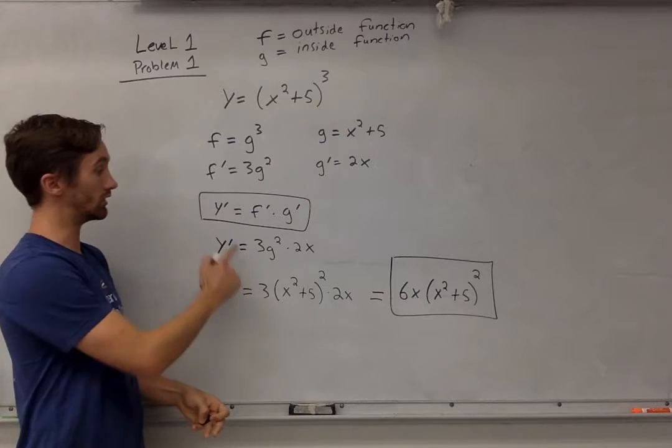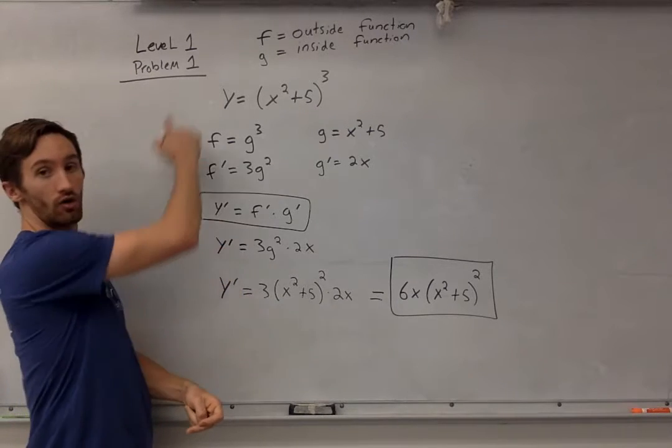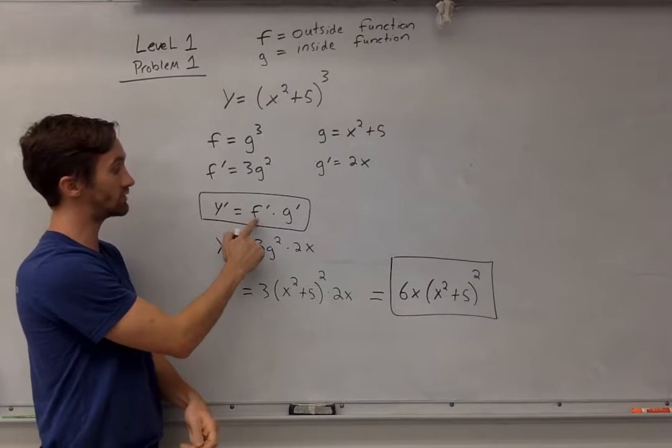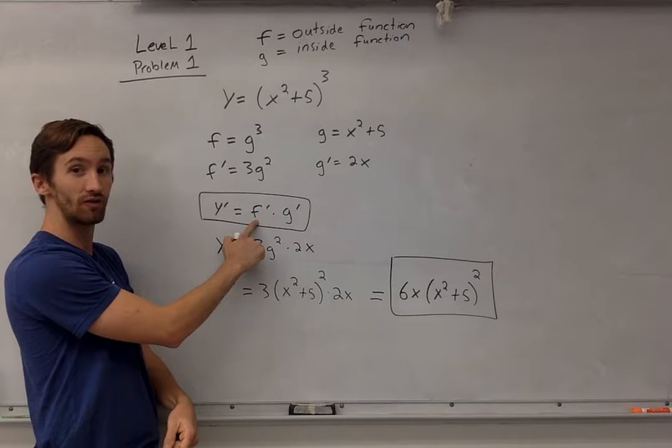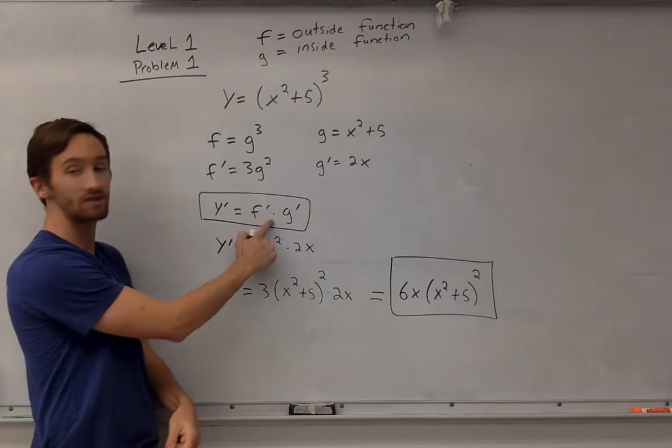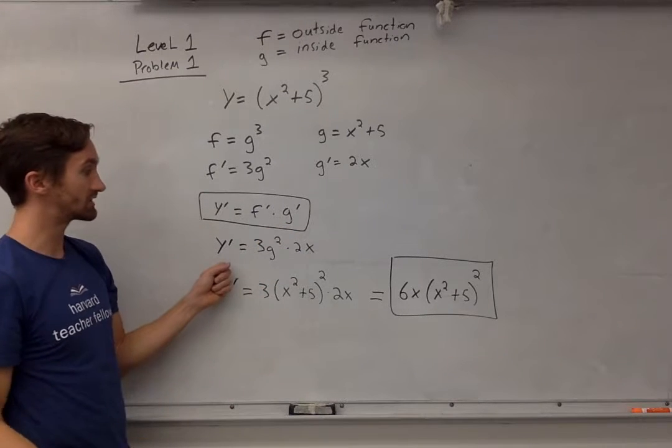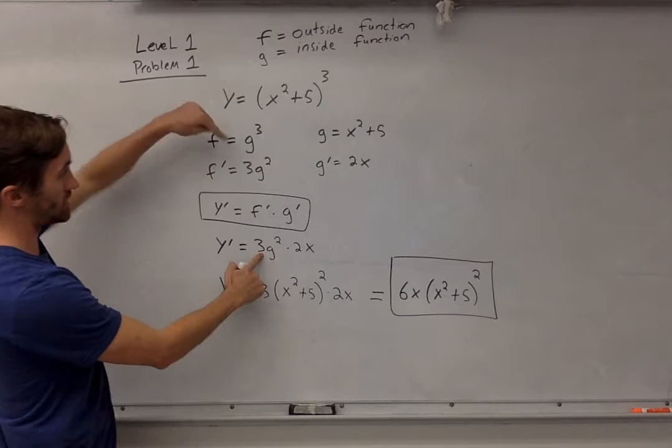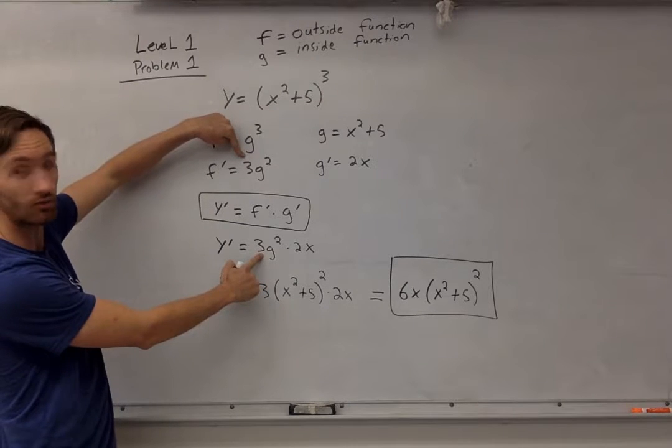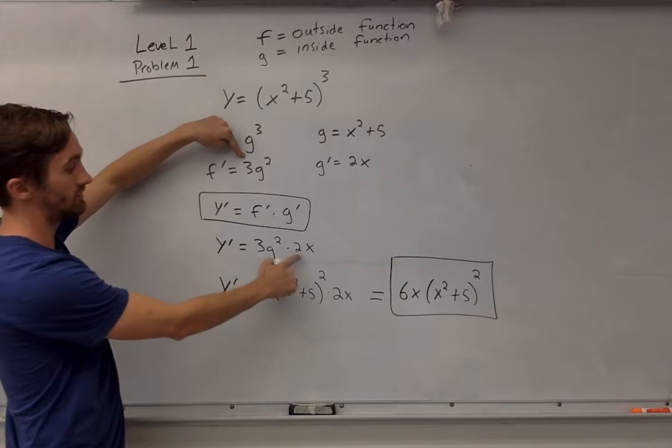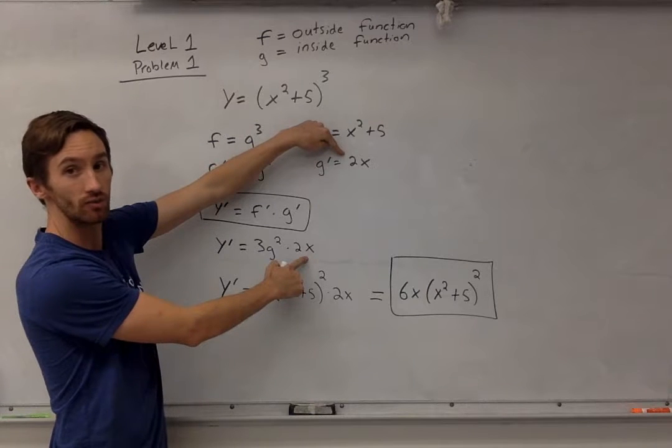I'm going to do the chain rule where the derivative of the whole thing equals the derivative of the outside function, f', times the derivative of the inside function, g'. That leaves me with 3g² times 2x.